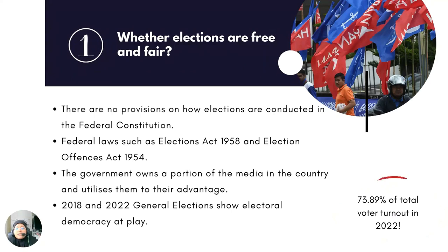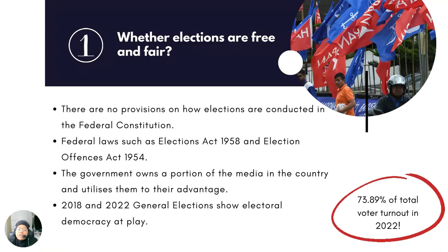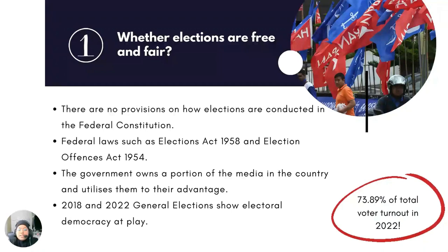The first question to be asked is whether elections are free and fair. In the Federal Constitution, there are no provisions on how elections are to be conducted. The Federal Constitution only goes as far as setting up an election commission and giving the Prime Minister the power to request for the dissolution of parliament to the Yang Dipertuan Agong. However, there are other laws enacted to regulate the affair of elections, such as the Elections Act 1958 and the Election Offences Act 1954. We will assess this question by looking at how elections have been conducted in the past. Generally, elections in Malaysia have thus far been peaceful and have not been followed by periods of violence or riots, and the transition or transfer of power from one administration to another has so far had no problems.